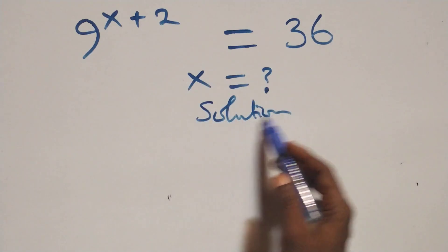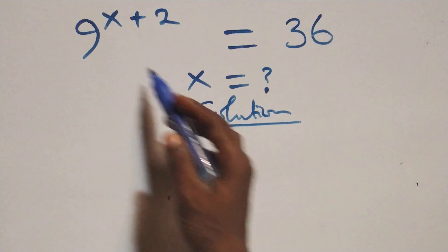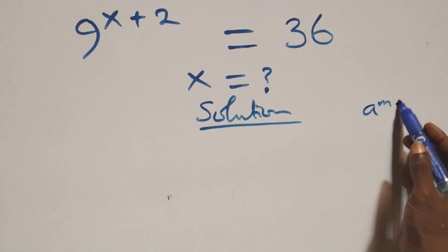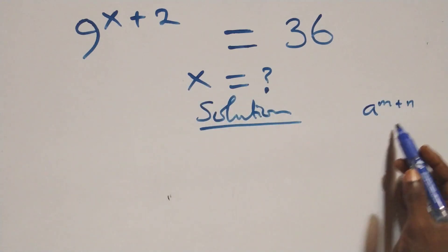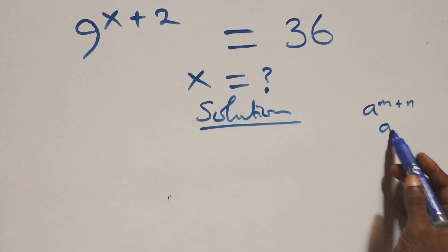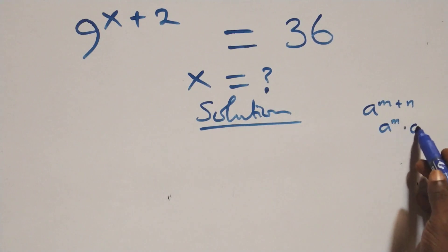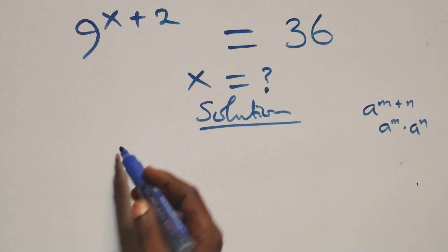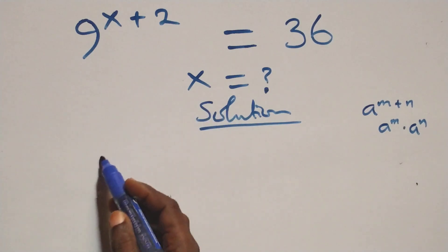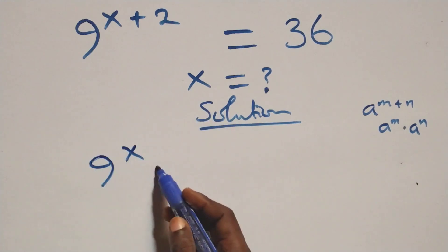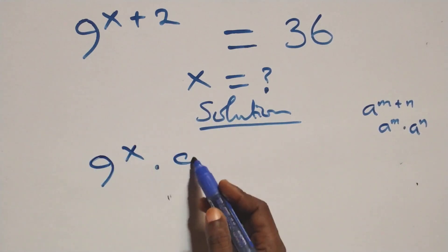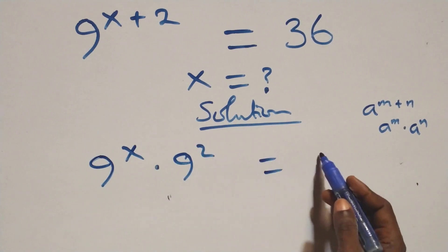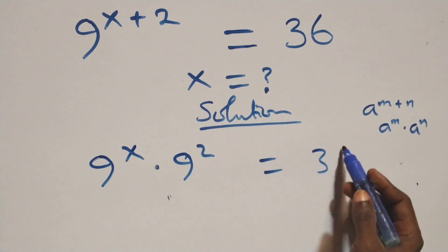From what we have here, this follows when we have a raised to power m plus n, which is the same thing as a raised to power m times a raised to power n. This becomes 9 raised to power x times 9 squared, which is equal to 36.